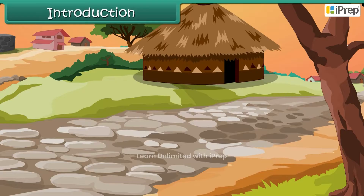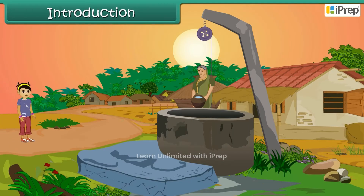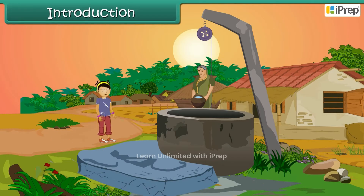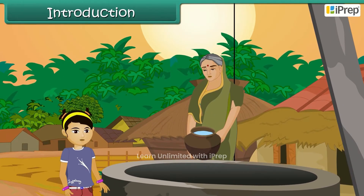Ammu was new to the village. She saw her granny drawing water from the well and was curious to know more about wells. So she inquired her grandmother, and this is what her grandmother explains.